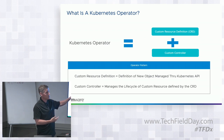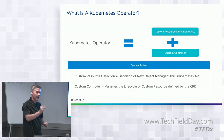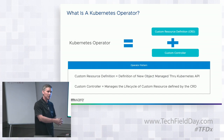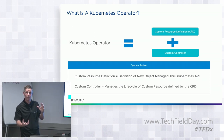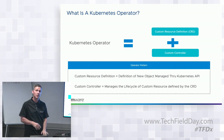If you just have a custom resource definition, there's nothing really going on with it — it's sort of like just a data store. If you add a controller to it, the controller is the thing that can now do something once you instantiate your object. So if you had a custom object for a database, you would get an object in Kubernetes, but to actually create the database — which may run in a VM — you would need a controller to watch and then create it. The combination of the resource definition and a controller is what we think of when we say a Kubernetes operator.